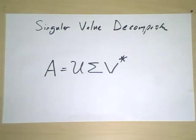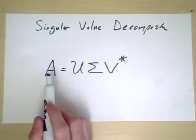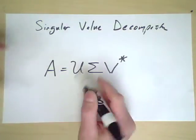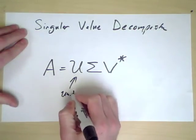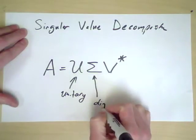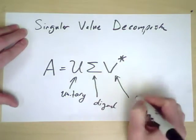This video is the first in a short sequence on the singular value decomposition. This is one of the most important results in the geometry of linear algebra. What it says in short is that any matrix A can be decomposed into a unitary matrix, a diagonal matrix, and another unitary matrix.